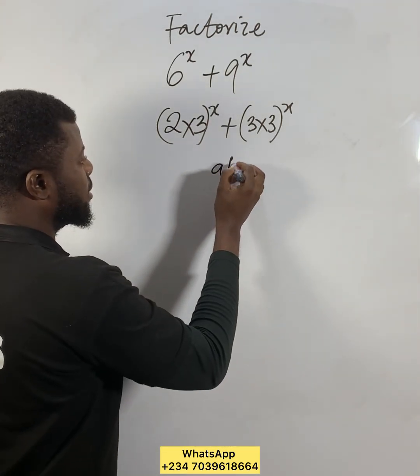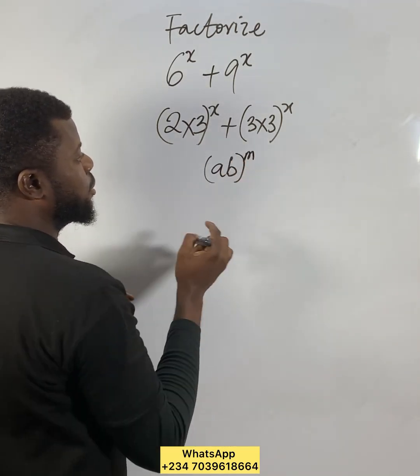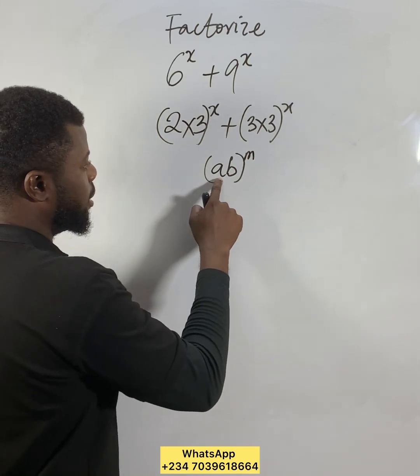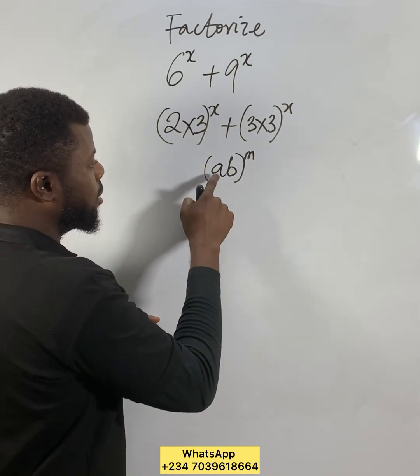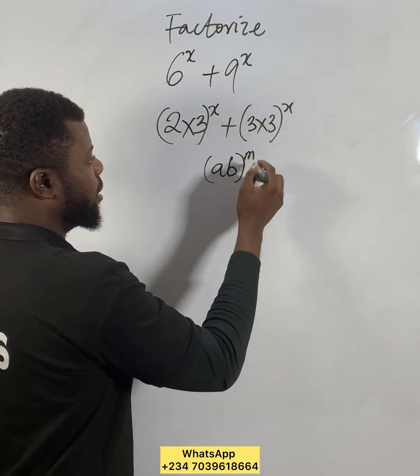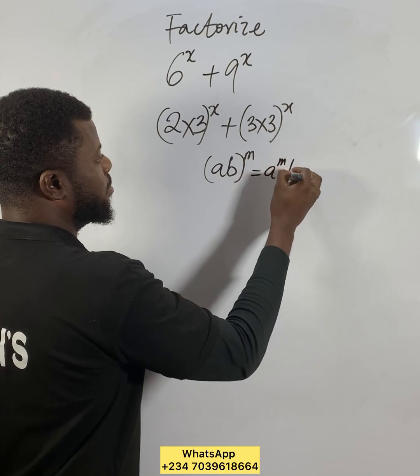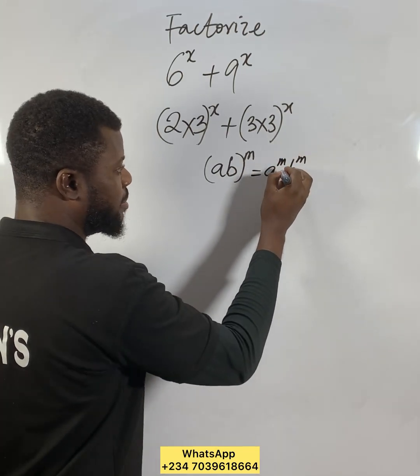When you see (ab)^m like this, the rule I want to show you is this: the power m applies to both. So (ab)^m is the same thing as a^m times b^m when you multiply them together.